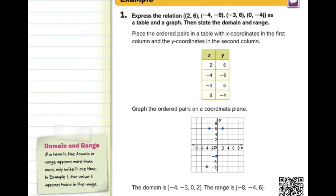Now that we know some basic vocabulary — relations, x-coordinates, y-coordinates, domain, range — let's start putting it together. Example 1 says: express the relation {(2,6), (−4,−8), (−3,6), (0,−4)} as a table and a graph, then state the domain and range.